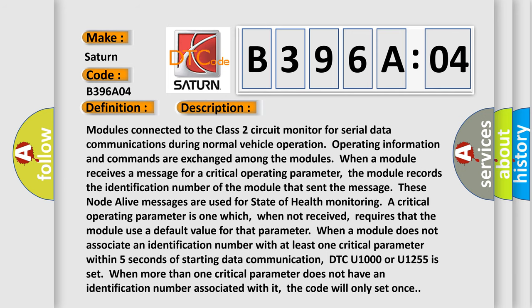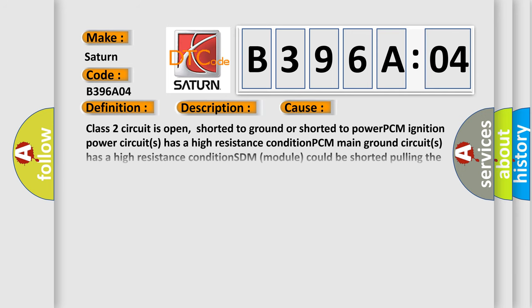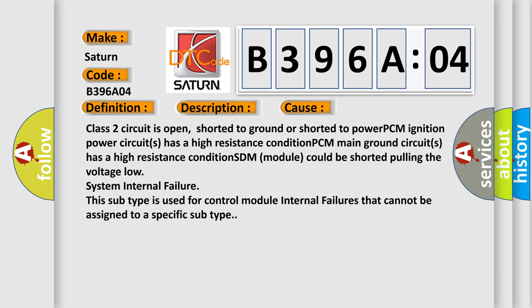This diagnostic error occurs most often in these cases: Class 2 circuit is open, shorted to ground or shorted to power; PCM ignition power circuits has a high resistance condition; PCM main ground circuits has a high resistance condition; SDM module could be shorted pulling the voltage low; system internal failure. This subtype is used for control module internal failures that cannot be assigned to a specific subtype.